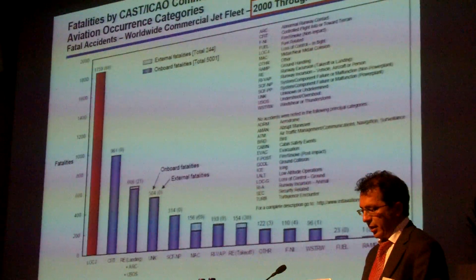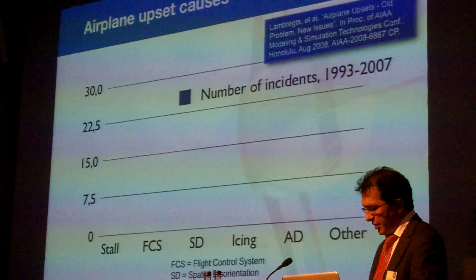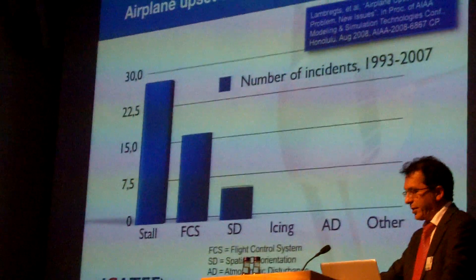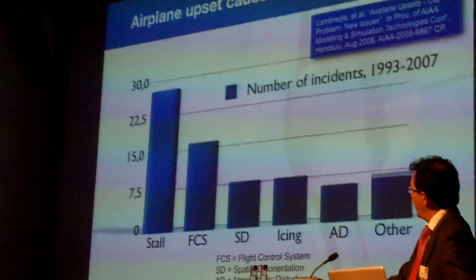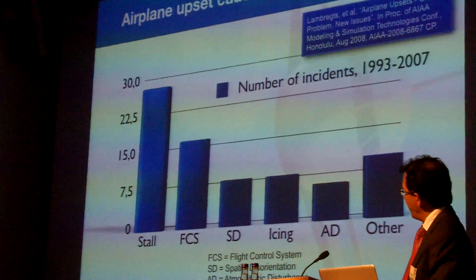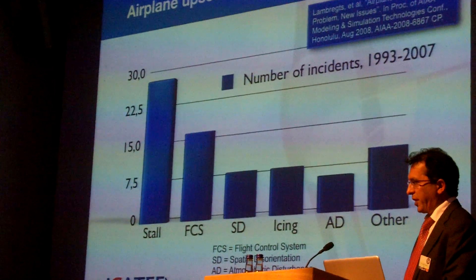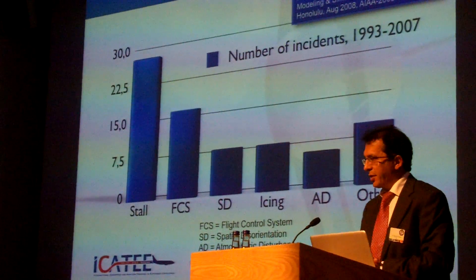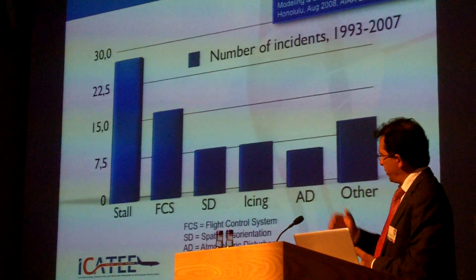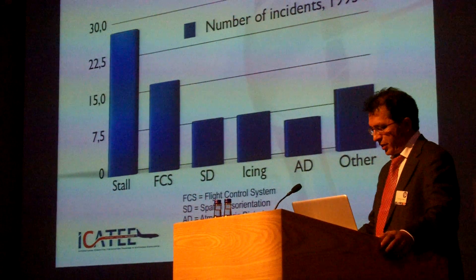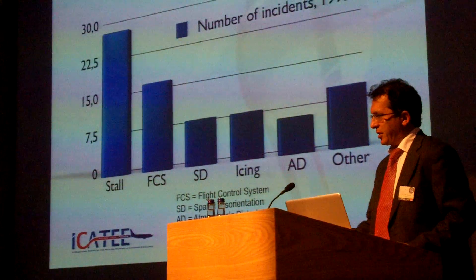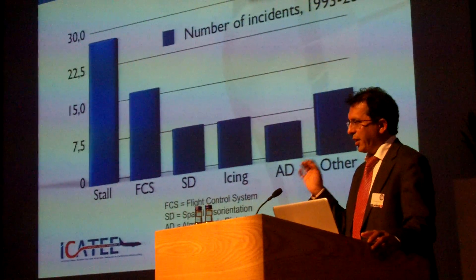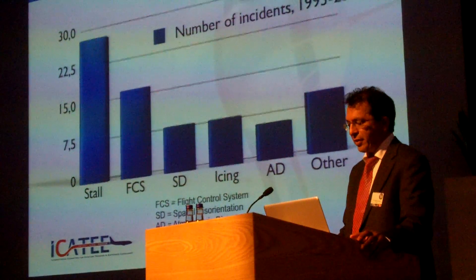In ICANN, we've started to understand and analyze these incidents, looking at what the causes are of airplane upsets. From a paper presented by Tony Lambrex of the FAA, stall, flight control systems, spatial disorientation, icing, atmospheric disturbance, and other causes are the reasons for these upsets, with stall being the number one. The size of the stall column has been a primary area of our attention.